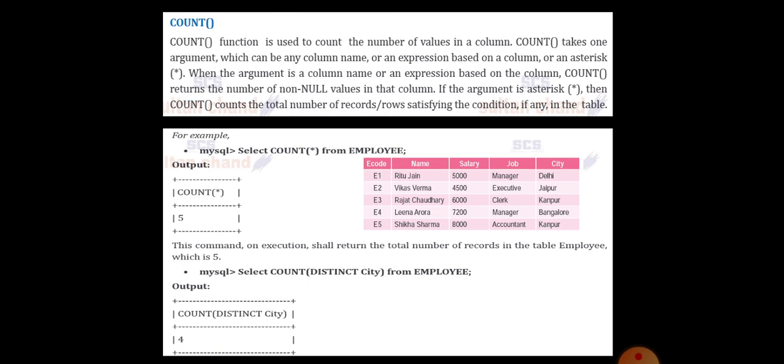So look at COUNT(*) from Employee. So it will count the first column. If the argument is asterisk, that COUNT stands the total number of records, rows satisfying the condition if any in the table. It won't count for any null value if you are giving star. So COUNT(*), we will get 5.